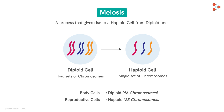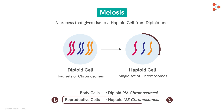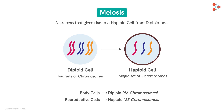Now, which are these reproductive cells that we've been talking about so far — cells with half the number of chromosomes? Let's find the answer in our next video!